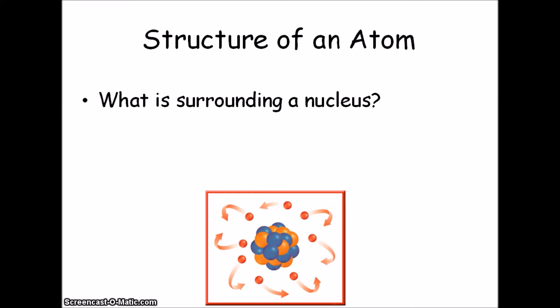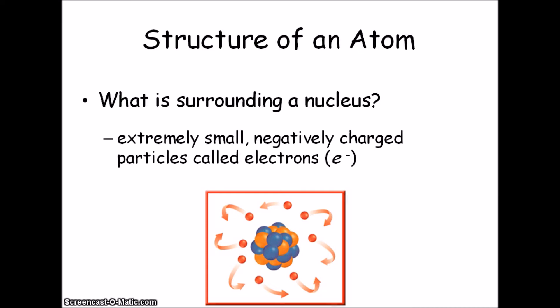Now, what is surrounding the nucleus? These would be extremely small, negatively charged particles called electrons. And these are represented with a lowercase e and with a negatively charged symbol as a superscript.